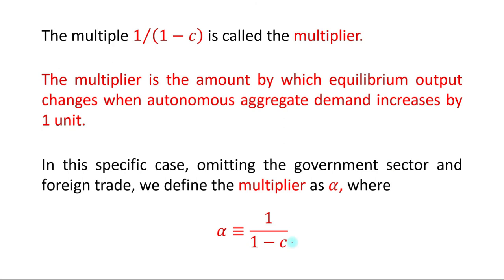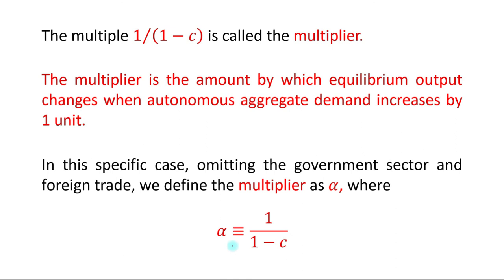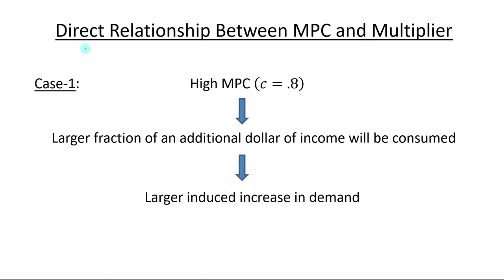The multiplier is the amount by which equilibrium output changes when autonomous aggregate demand increases by one unit. Basically, the multiplier shows the change in equilibrium level of output due to change in autonomous spending. In this specific case, omitting the government sector and foreign trade, we define the multiplier as alpha, where alpha is identically equal to 1 upon 1 minus MPC. There is a direct relationship between MPC and the multiplier.